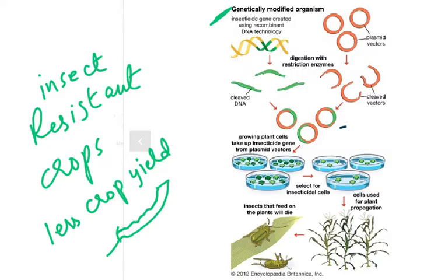An insecticide gene is created using recombinant DNA technology. We use plasmid vectors, digest them with restriction enzymes to produce cleaved vectors — the plasmid is a vector because it carries the gene of choice into the organism. The insecticide gene is inserted into plant cells, and then we select for insecticidal cells and use that cell for plant propagation. Insects that feed on these plants will die.